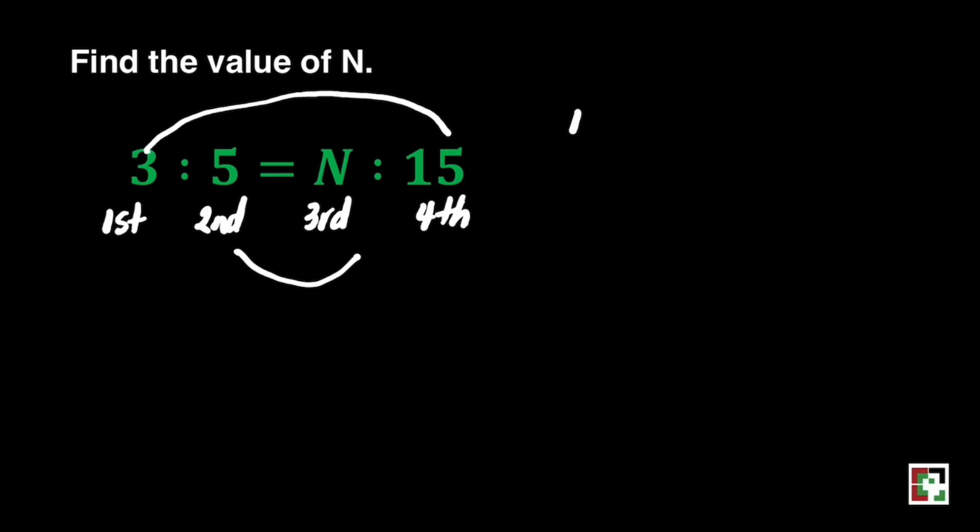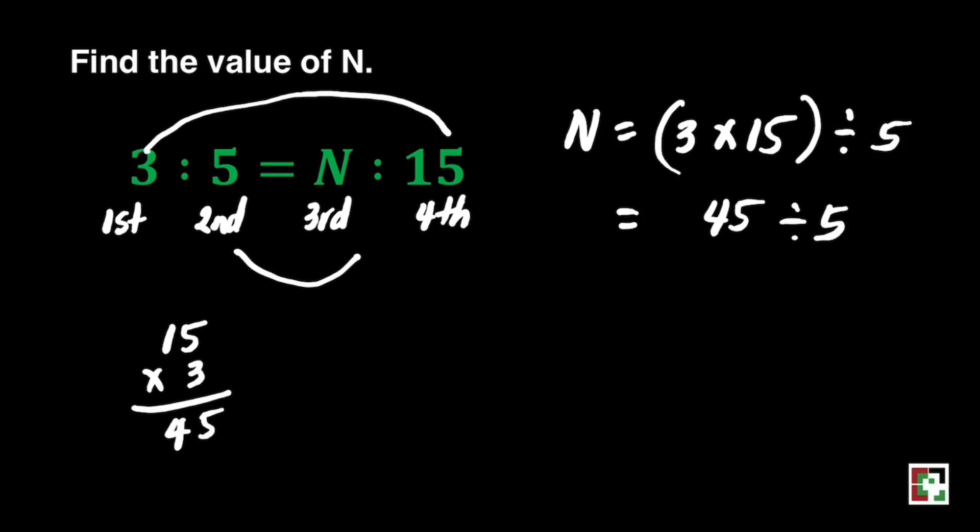We're ready to solve. N is equal to 3 times 15 divided by 5. 3 times 15 is equal to 45. Divided by 5, the answer is 9. Our n is equal to 9. Easy, right?